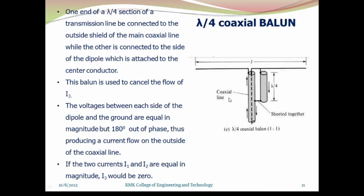The second type is the lambda/4 coaxial balun. Here, a metallic conductor is connected alongside the coaxial line — not encapsulating it — whose length is lambda/4. Because of this, the I3 current components are cancelled while flowing toward the shield of the coaxial cable. This reduces the I3 current component, and we can make I1 equal to I2 at the terminals of the antenna. The main objective is to minimize the I3 current component flowing around the outer shield.